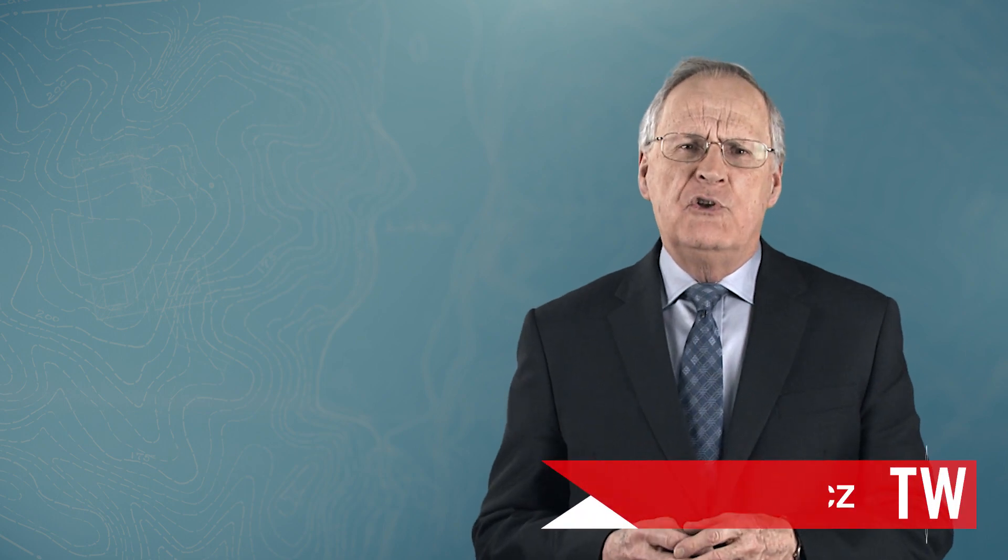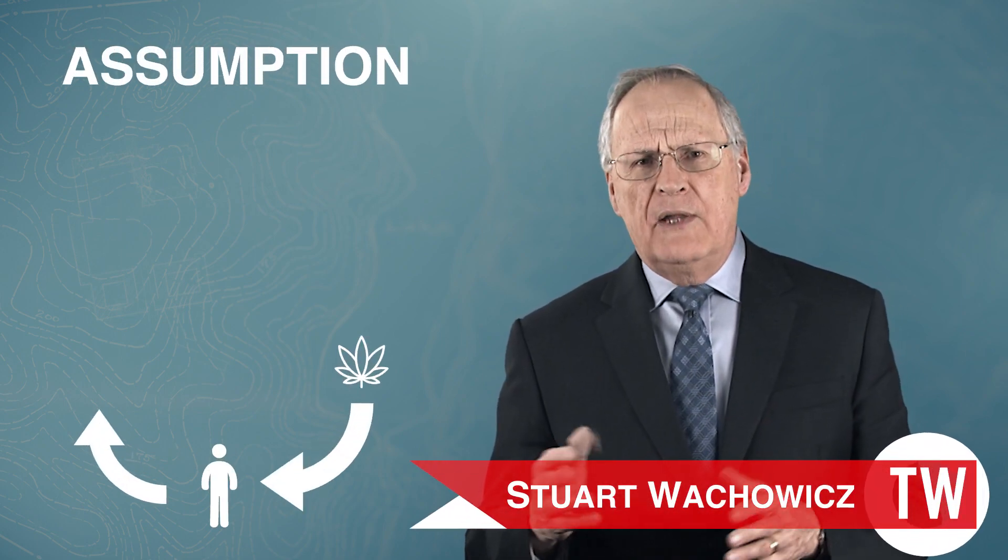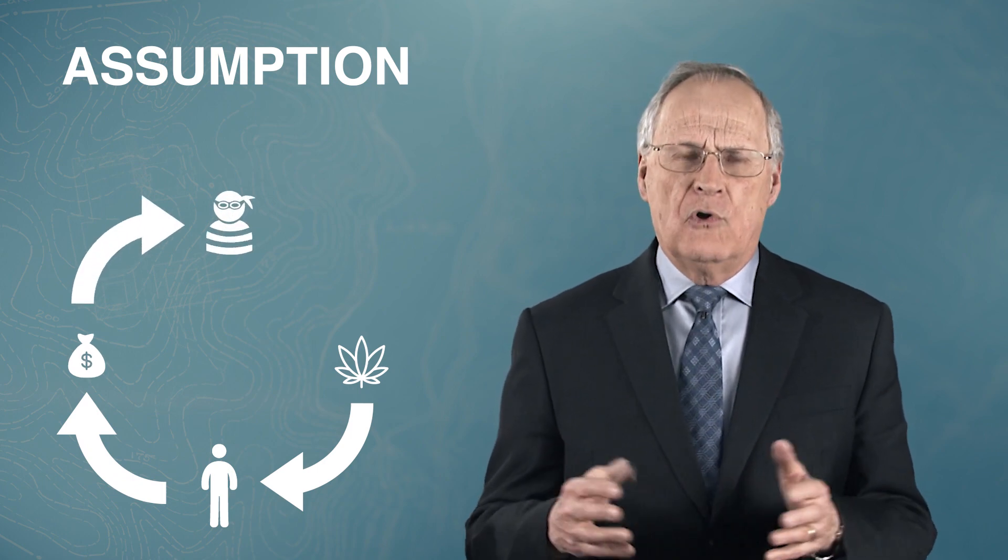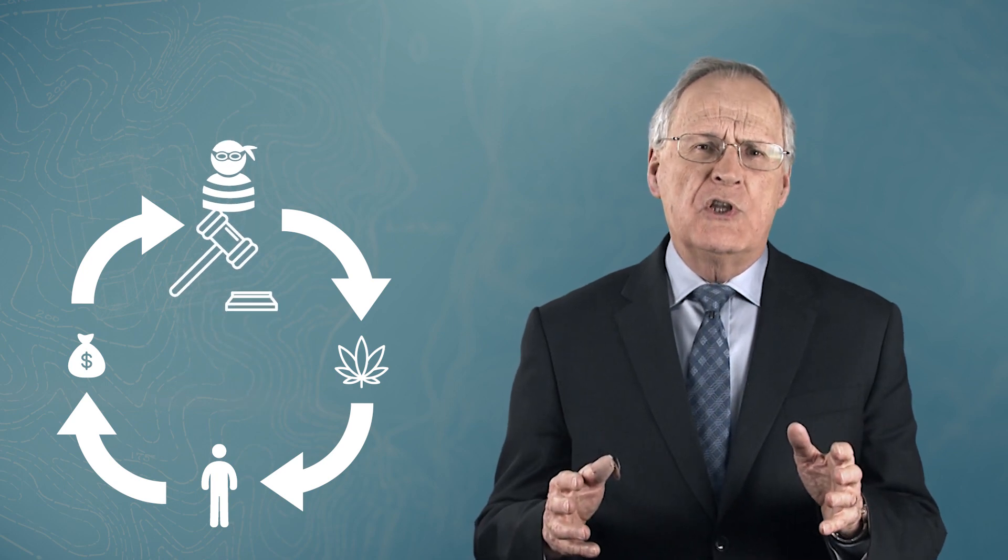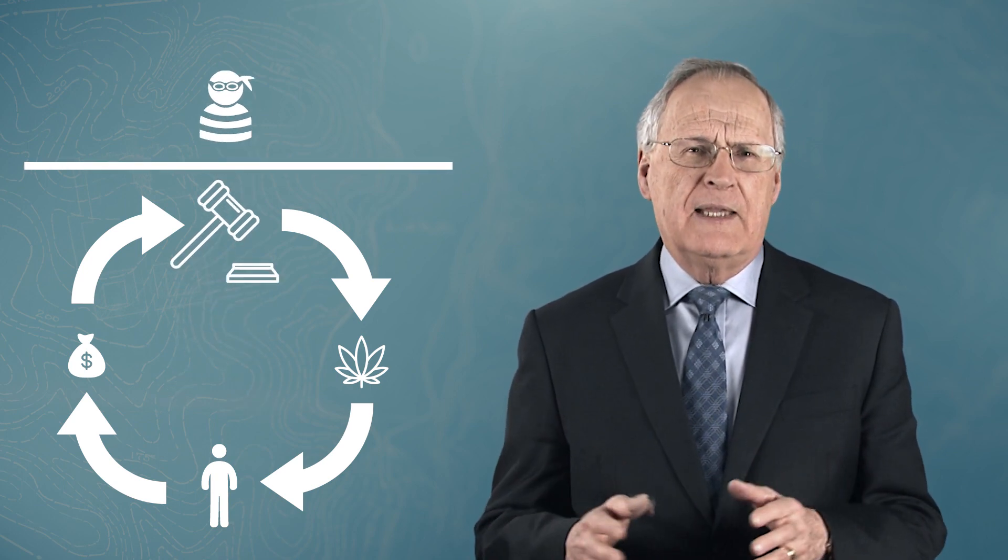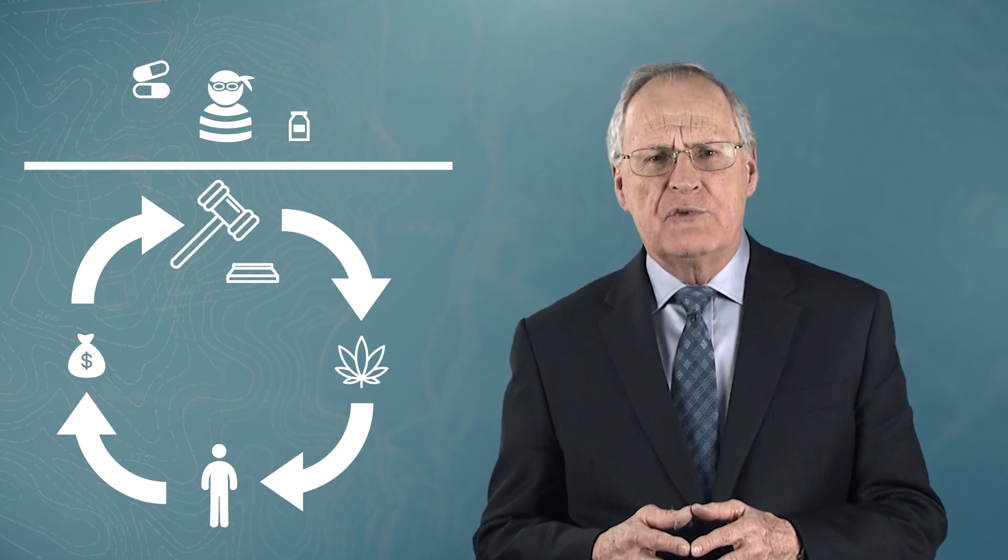A key argument used by proponents is the assumption that legalizing pot will undermine a key source of income for organized crime. The position is put forward that legalization would reduce the contact of users with the criminal element and hence lessen the likelihood of involvement with more serious drugs.